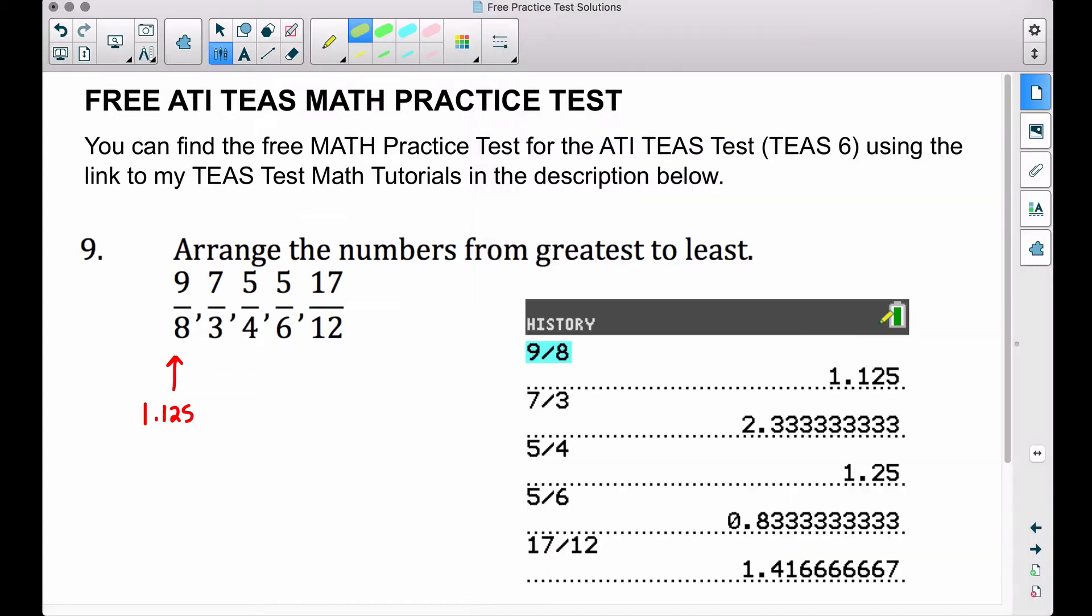So if we think about money, the biggest one, greatest to least, the biggest one I see, money-wise I think of that is like a dollar and 13 cents. Roughly this is two dollars and 33 cents, this is a dollar and 25 cents, this is roughly 83 cents, and this is around a dollar and 42 cents.